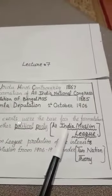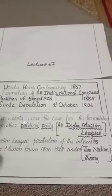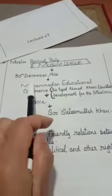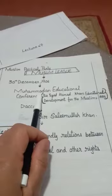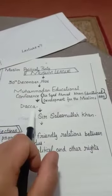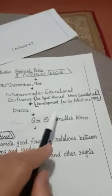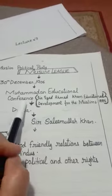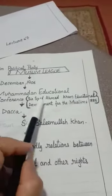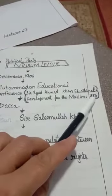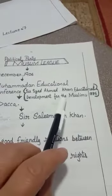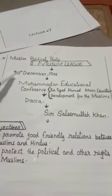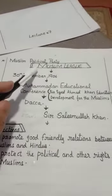That political party was the All India Muslim League, founded on 30th December 1906 at the Muhammadan Educational Conference at Dhaka by Sir Salimullah Khan. For your information: this conference was originally set up by Sir Syed Ahmad Khan in 1886 for the educational development of Muslims. In this conference, Sir Salimullah Khan put forward the foundation of a separate Muslim political party — the Muslim League.